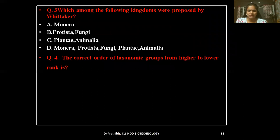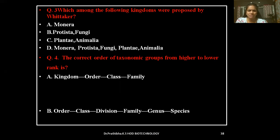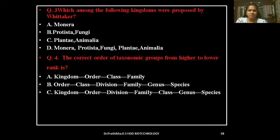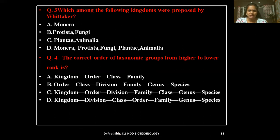Question 4: The correct order of taxonomic groups from higher to lower rank is — (A) Kingdom, Order, Class, Family, Order, Class, Division, Family, Genus, Species; (B) Kingdom, Order, Division, Family, Class, Genus, Species; or (C) Kingdom, Division, Class, Order, Family, Genus, Species. Keep your right answer ready.